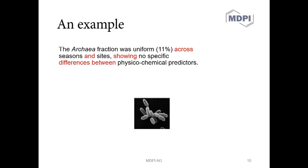So this is my suggestion. I've changed in seasons to across seasons and I've replaced the second and here, just put a comma and saying showing no specific differences, and I've changed this preferences to differences between physico-chemical predictors.